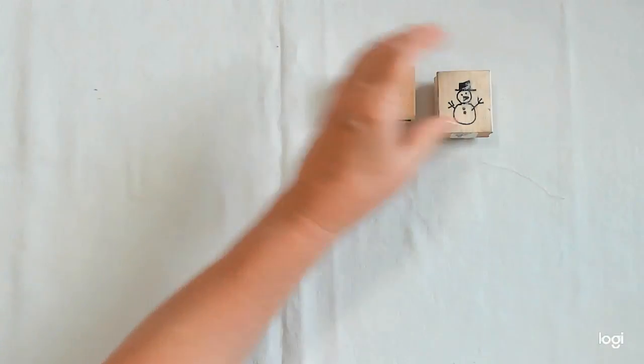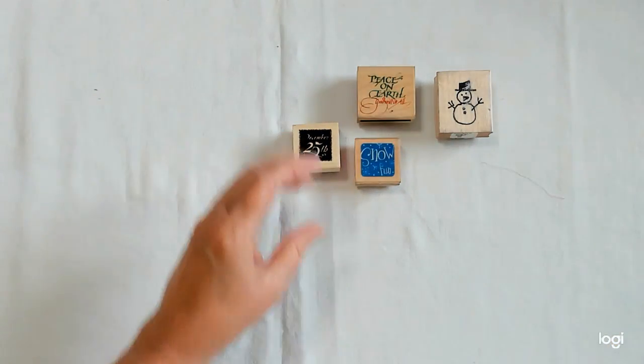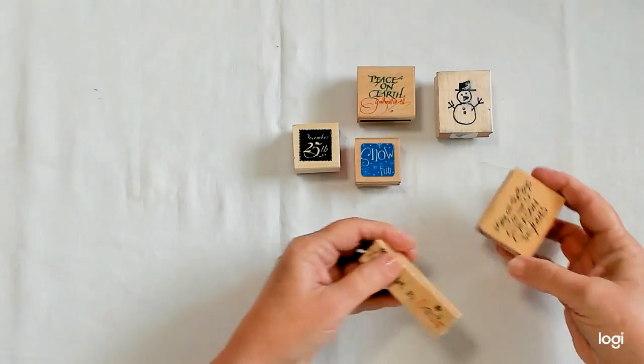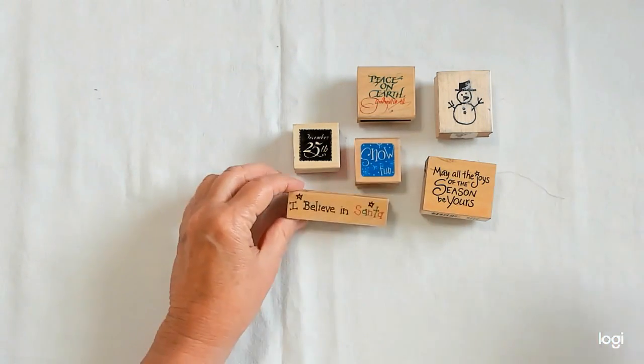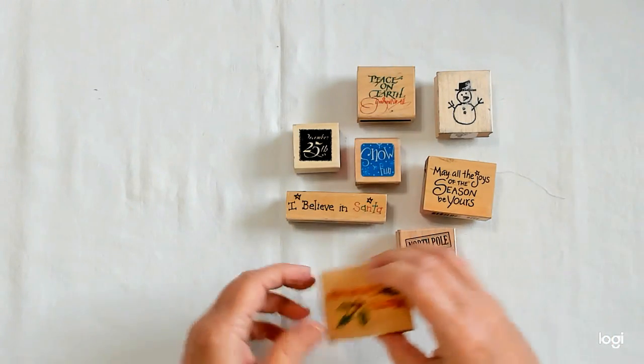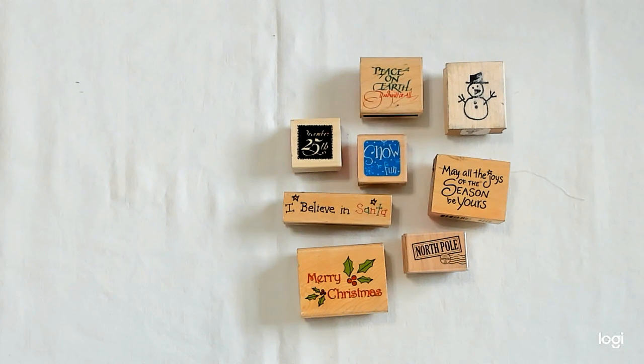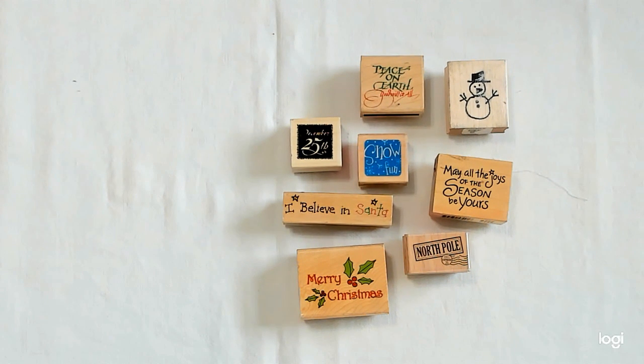And it looks Christmassy enough to me to work. It's got some gold in it, some pretty green, and the pink. I just think it's pretty. And I can use it for other things too, I think. So I got that. So that's my fabrics. I picked up a few stamps, and there wasn't a lot of those either. This was all I could find.